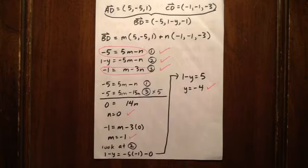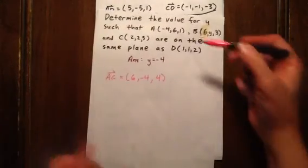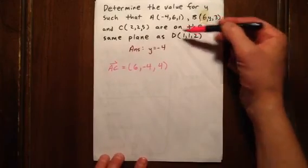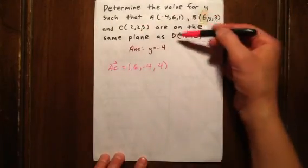So we know that if y is -4, that these four points all lie on the same plane.